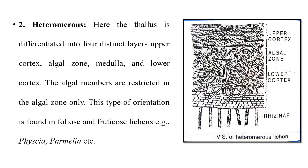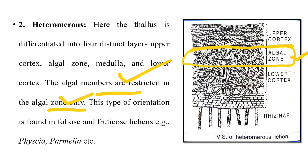In homoisomerous lichens, both partners intermingle and form a thin outer protective layer, as seen in Leptoseum and Collema. In heteromerous lichens, the thallus is differentiated into four layers: outer cortex, algal zone, medulla, and lower cortex. Algal members are restricted to the algal zone only; all other parts are occupied by the fungus. This type is found in foliose and fruticose lichens — for example, Physcia and Parmelia.